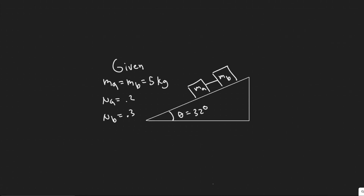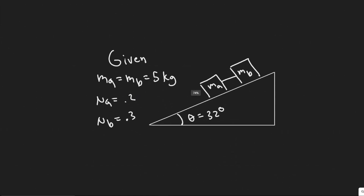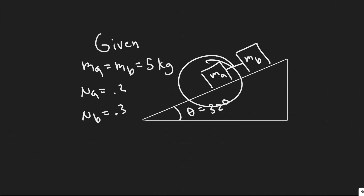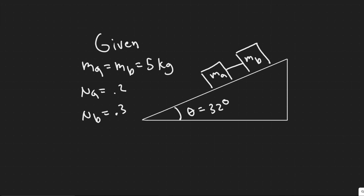So I went ahead and drew the figure here. We have this incline with an angle of 32 degrees. We have these two blocks, ma and mb, connected by this cord. We know the mass of the blocks and the coefficient of kinetic friction between each block and the floor — for A it's 0.2, and for B it's 0.3.